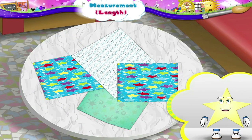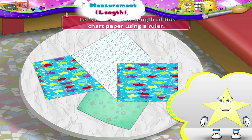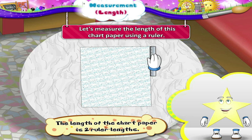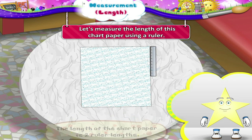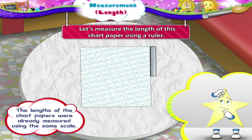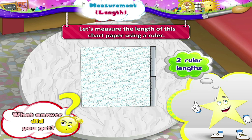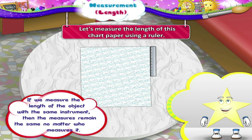Hey Starry! See, here are some chart papers. Let's measure the length of this chart paper using a ruler. The length of the chart paper is two ruler lengths. You had already measured the length of the chart paper using the same scale and got two ruler lengths as well. So it means if we measure the length of an object with the same instrument, then the measures remain the same, no matter who measures it.